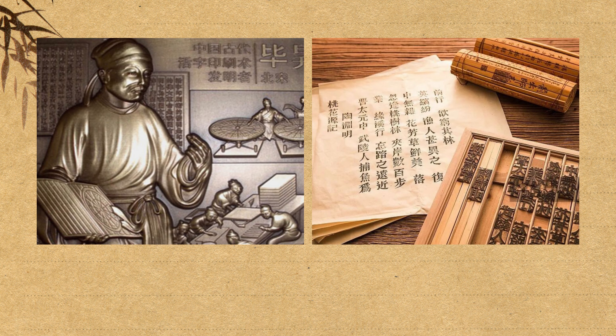While woodblock printing was an advancement in its own right, the real revolution came with the invention of movable type. Around the 11th century, during the Song dynasty, a Chinese innovator named Bi Sheng conceptualized the idea of creating individual characters on separate, movable pieces. Instead of carving a whole page of text on a single block, he crafted individual characters on pieces of ceramic.